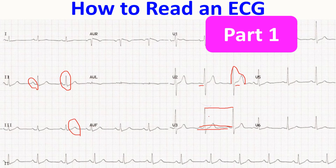But most often we take the RR interval from peak to peak, because that is easy to identify.